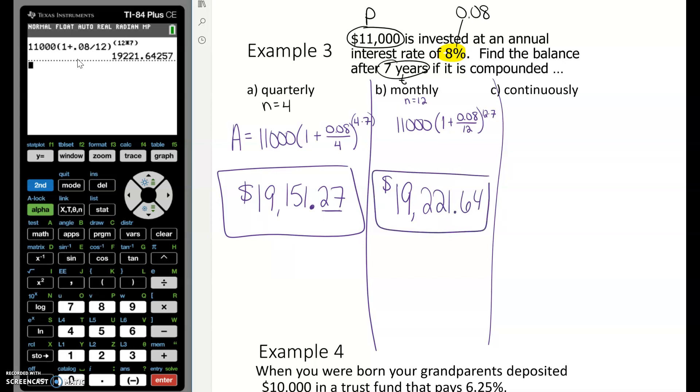So notice this is a little bit more than when we compounded quarterly. Compounding monthly means at the end of the month, they calculate how much interest you've earned, added into the account. The next month they calculate again on your new amount and added in. So if you're compounding more frequently, you're going to earn more money from that interest.